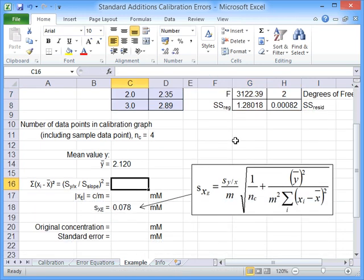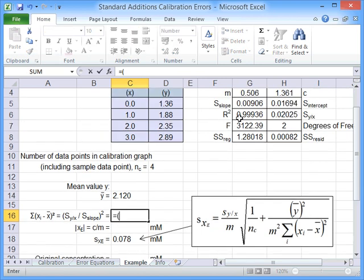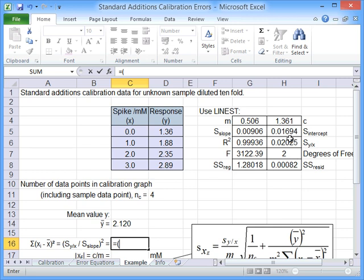The next step then is to get the sum of xi minus x mean squared. The shortcut for this is simply to say Sy of x divided by s slope squared.